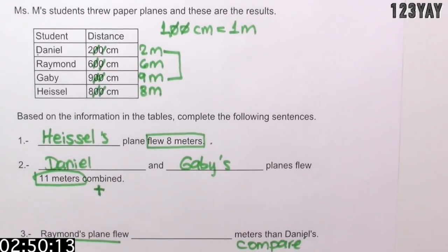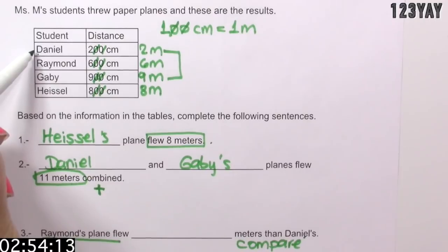Wow! Last but not least, we need to compare Raymond's plane with Daniel's plane. So Daniel's is 2 meters and Raymond's 6 meters. Do you know how to get the difference?